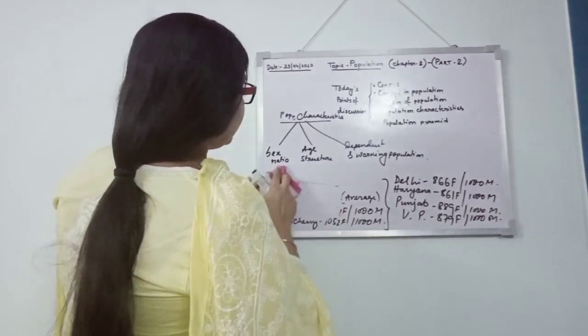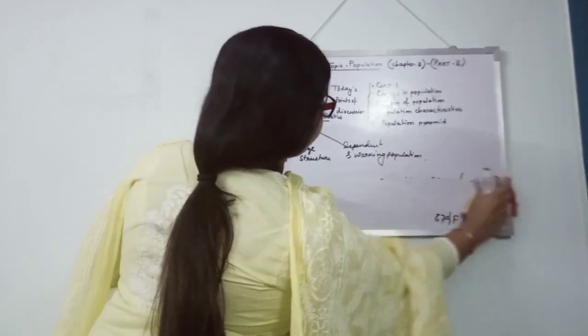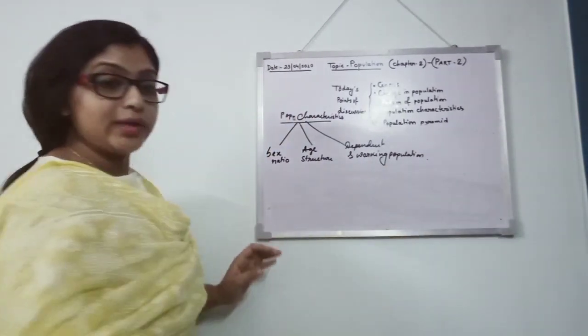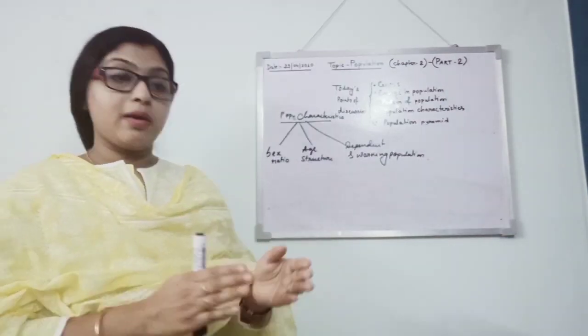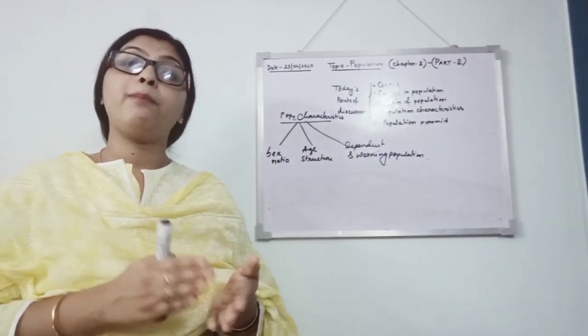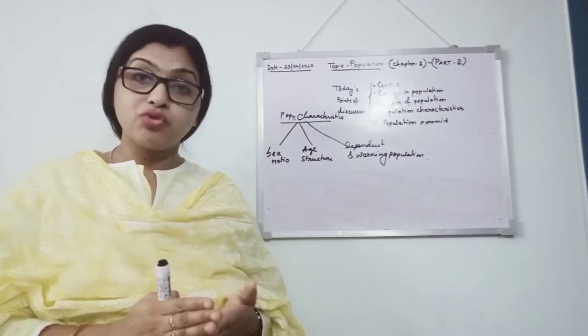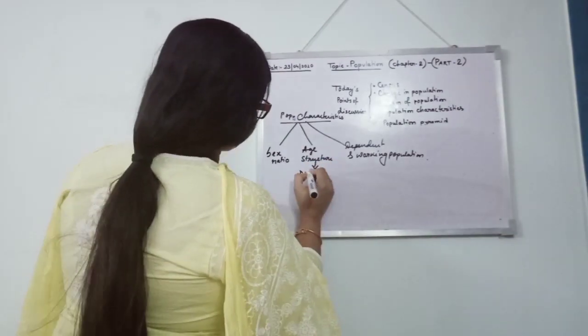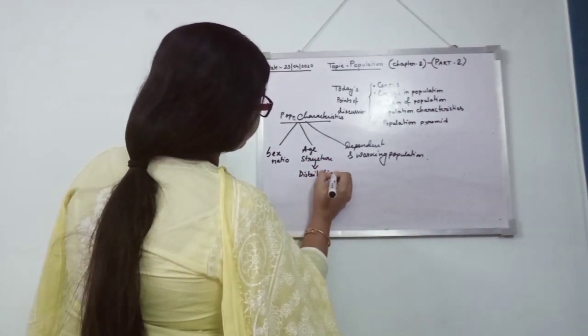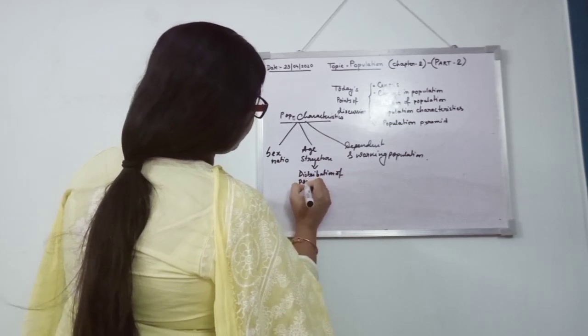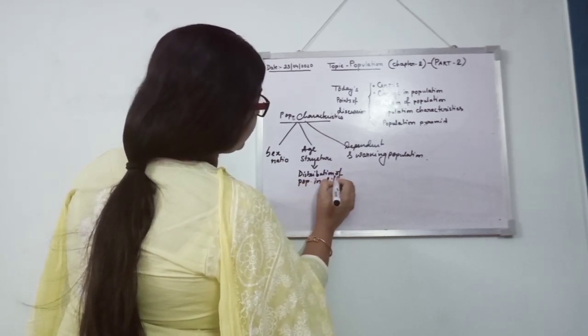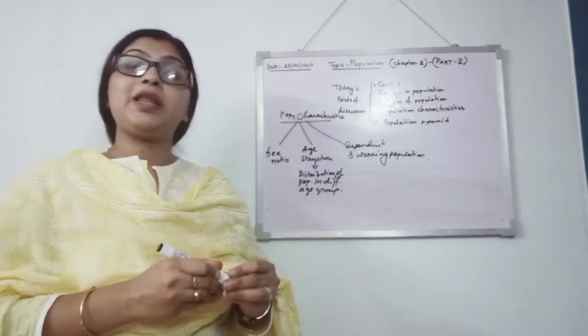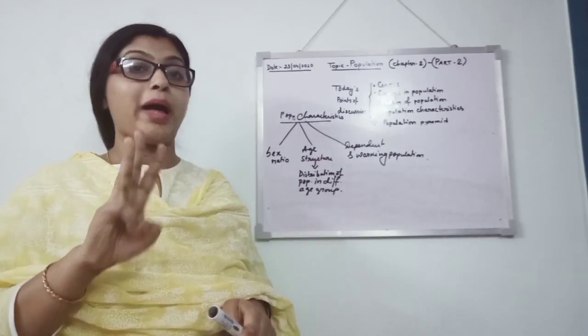So I am going to the next point, that is age structure. What is age structure? The definition is distribution of population in different age groups. So here we will get to see mainly 3 age groups, according to the census.